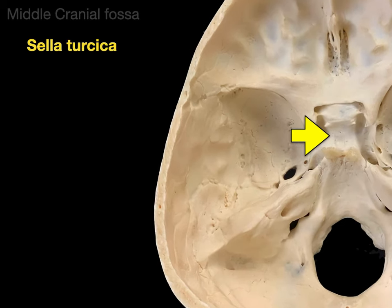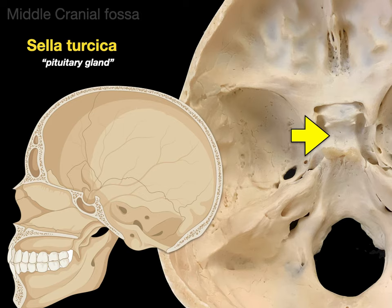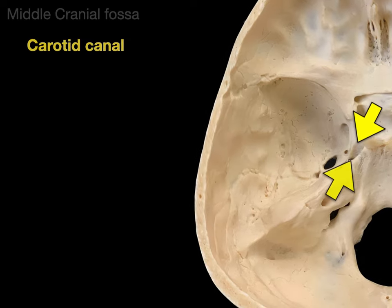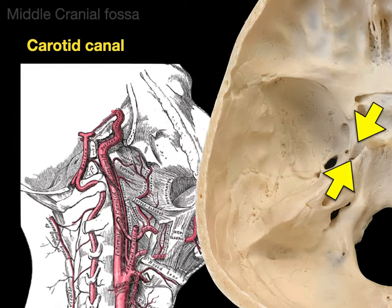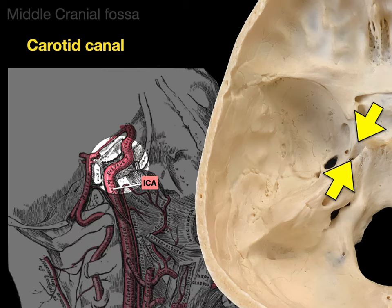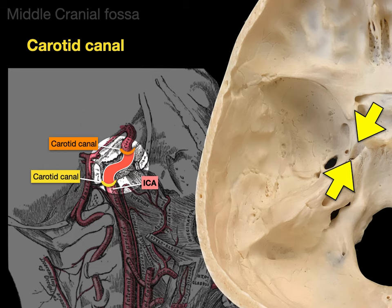Next is the sella turcica, which houses the pituitary gland. In the sagittal section, there's the sella turcica — it gets its name because it means a Turkish saddle, and the pituitary gland sits right inside it. Next is the carotid canal, located right there. As a canal, it runs from the bottom of the skull into the middle cranial fossa. The internal carotid artery traverses it — the canal begins at the bottom of the skull and the other end opens into the middle cranial fossa where we're looking now.